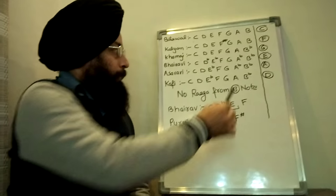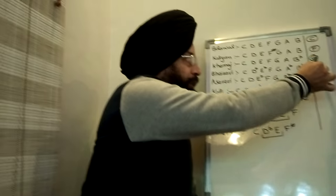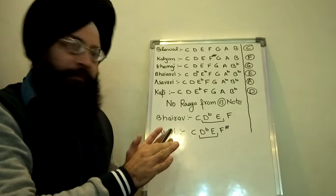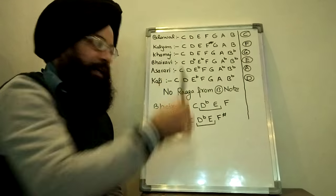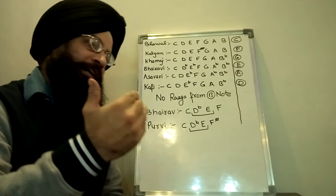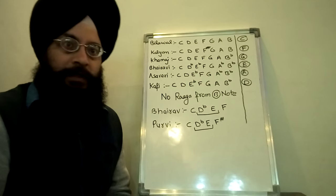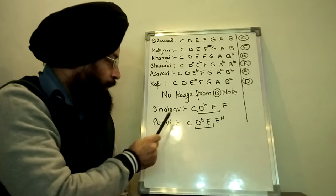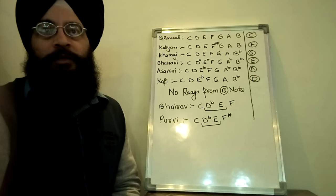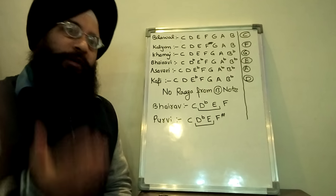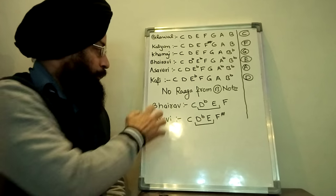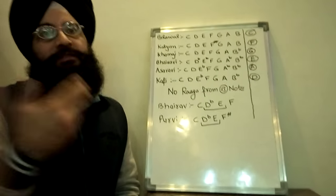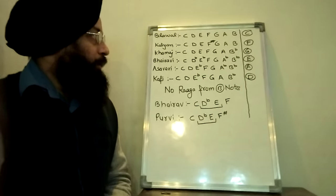So these 6 thats cover 6 of the 7 white key positions. Apart from these 6 thats, if a raga falls in the remaining 4 thats — which are Bhairav, Purvi, Marwa, and Todi — then if you are playing any song based upon these 4 thats, you have to press the slider, and there is no other option.